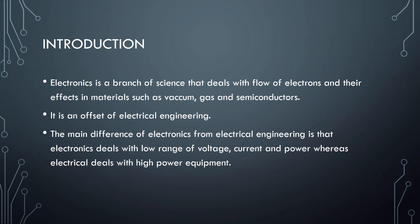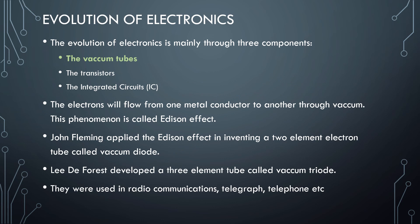The evolution of electronics is mainly through three components: the vacuum tubes, the transistors, and the integrated circuits (ICs). The first is vacuum tubes, where electrons flow from one metal conductor to another through vacuum — this phenomenon is called the Edison effect. John Fleming applied this Edison effect in inventing a two-element electronic tube called a vacuum tube or vacuum diode.